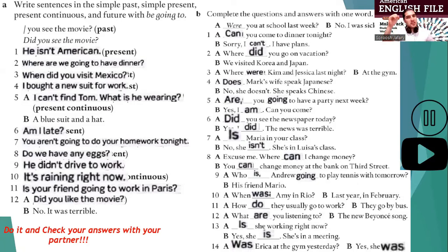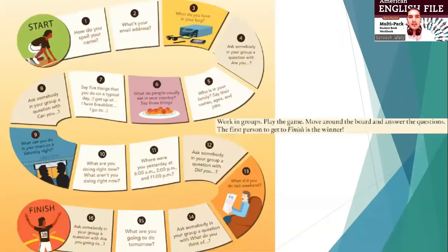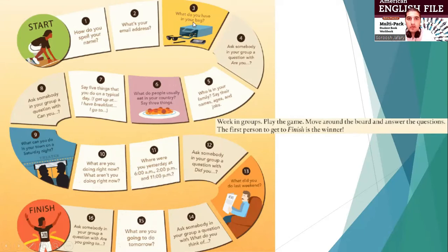Well done everybody. You did great. I am proud of you. Let's play a little game. This is the start and this is the finish line. You and your partner — work in groups, play the game, move around the board and answer the questions. The first person to get to finish is the winner. For example: How do you spell your name? What's your email address? What do you have in your bag? Do it with your partner.